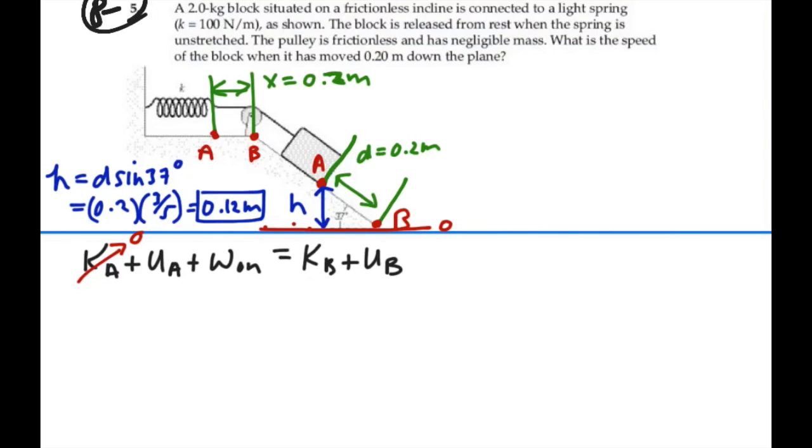We are going to have kinetic energy at B. We want to find out how fast we're going when we're at point B, so we will have kinetic energy there. In terms of potential energy, we have mgh at A, but the spring is still unstretched at that point, so we don't have any spring energy at point A.